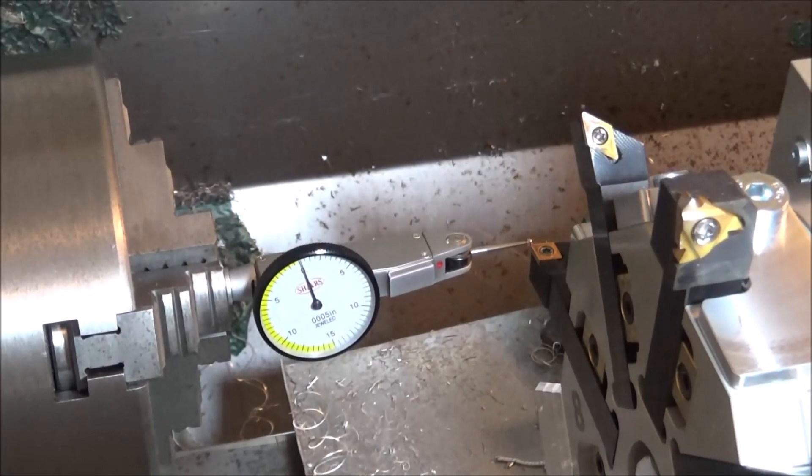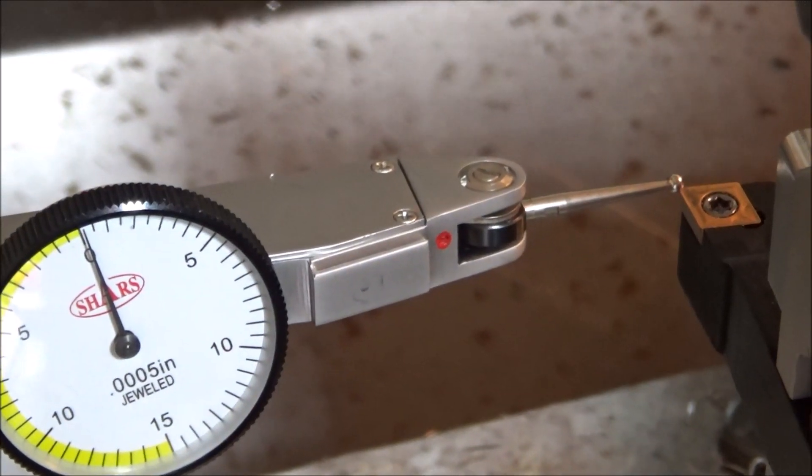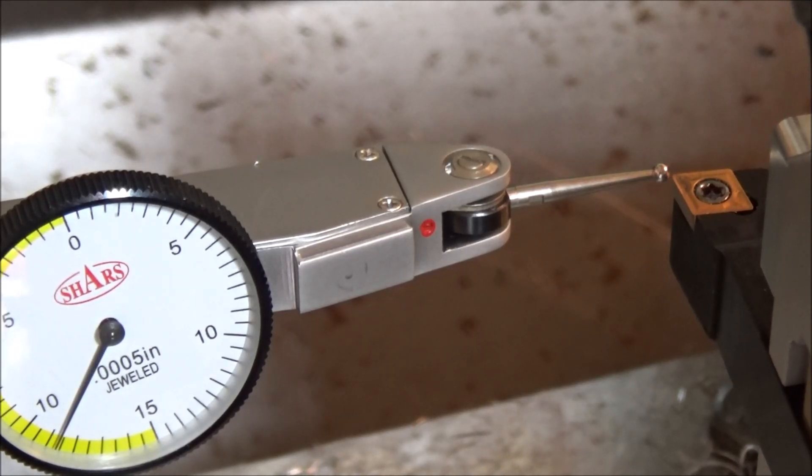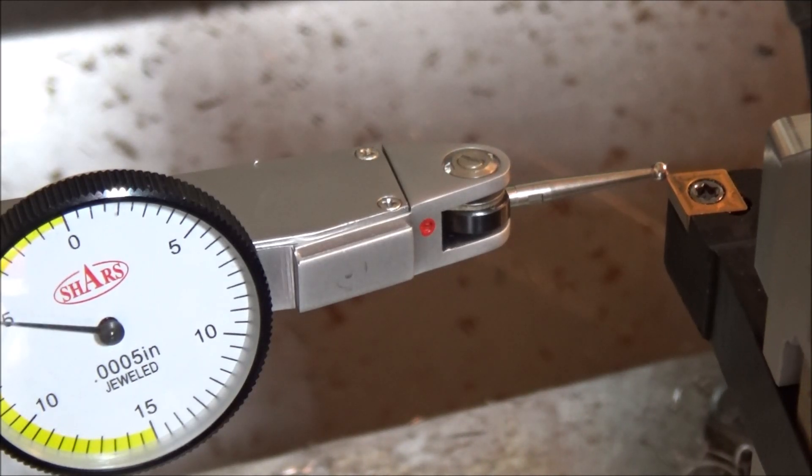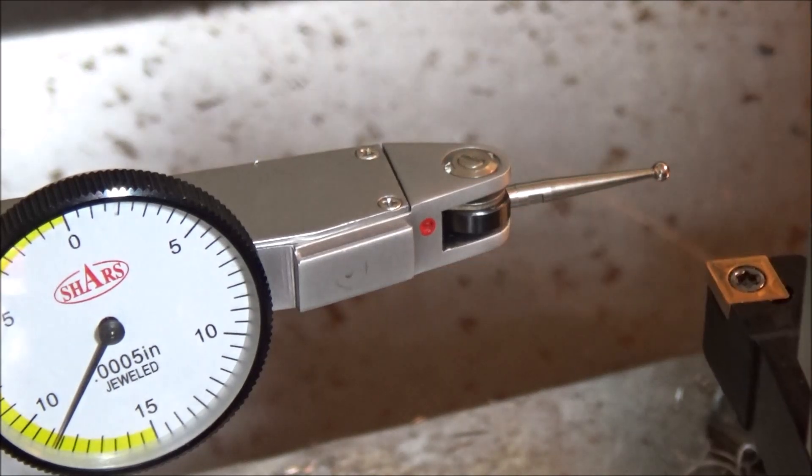Now all the tools will be offset to tool number 1. So what I'm going to do is jog this till it stops touching there, so the indicator quits moving right there. Then I'm going to zero out my Z-axis DRO as well. Now I've set Z zero and X zero to tool number 1.